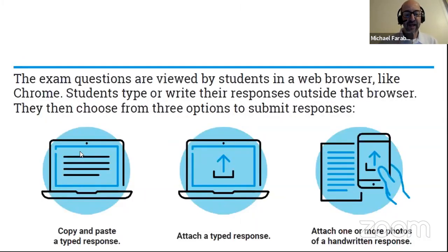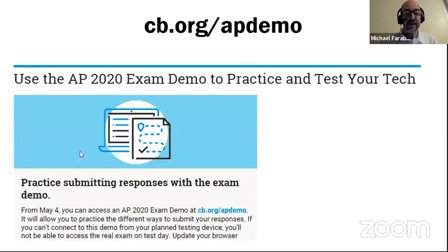There are three different ways that you can submit your responses to the online AP exam. You can either type it in a document and cut and paste, you can save a document and attach it, or you can handwrite your response, take a picture, and attach the photos. There is an AP 2020 exam demo that is live for you to practice and test whether your technology is working — go to cb.org/APdemo, and you can practice as many times as you want using different submission methods.